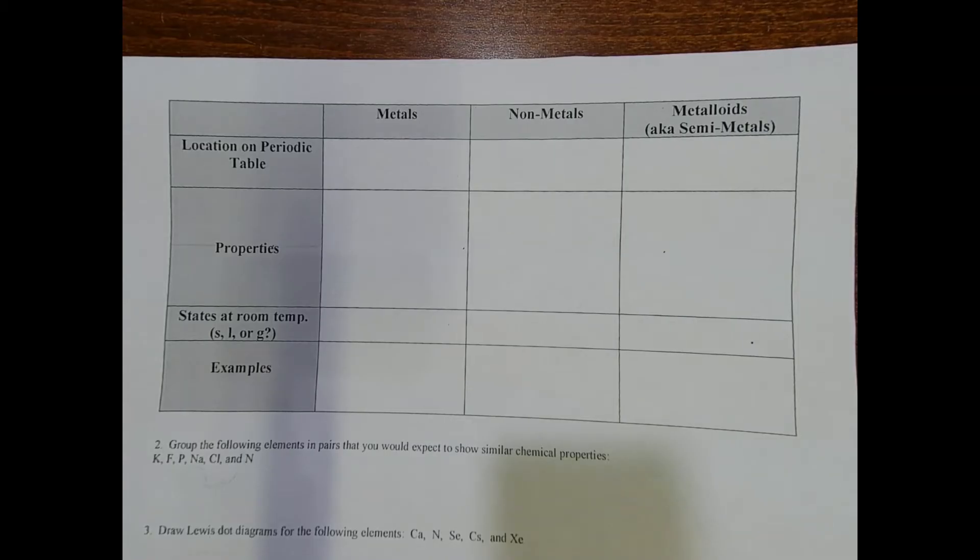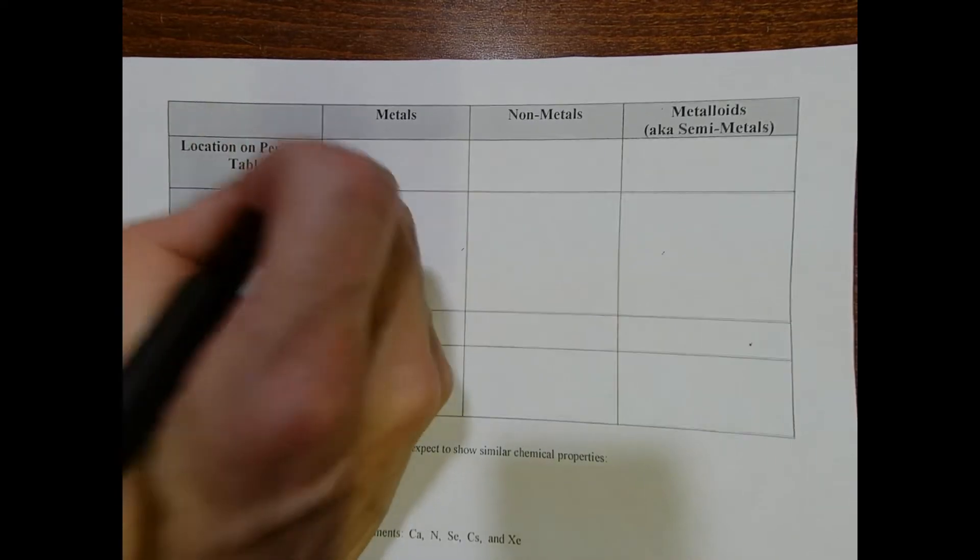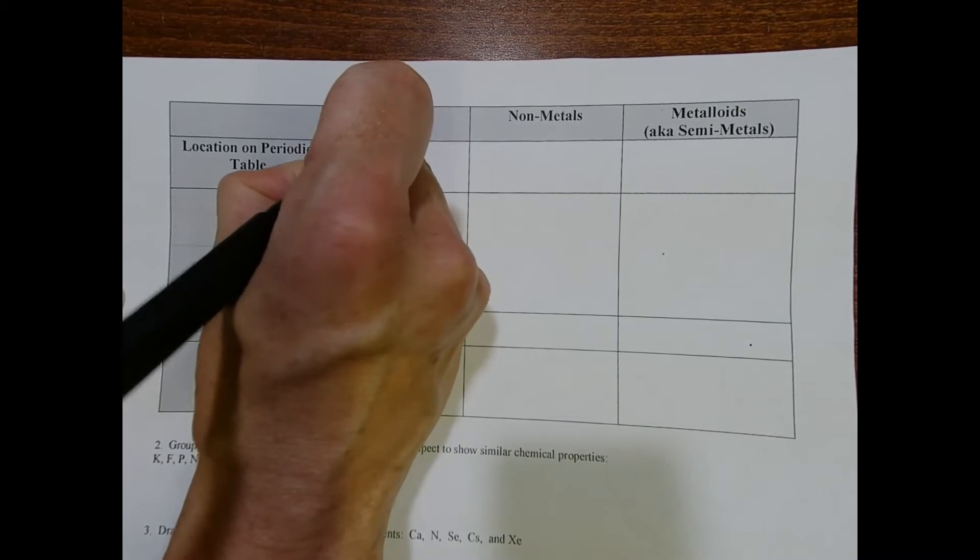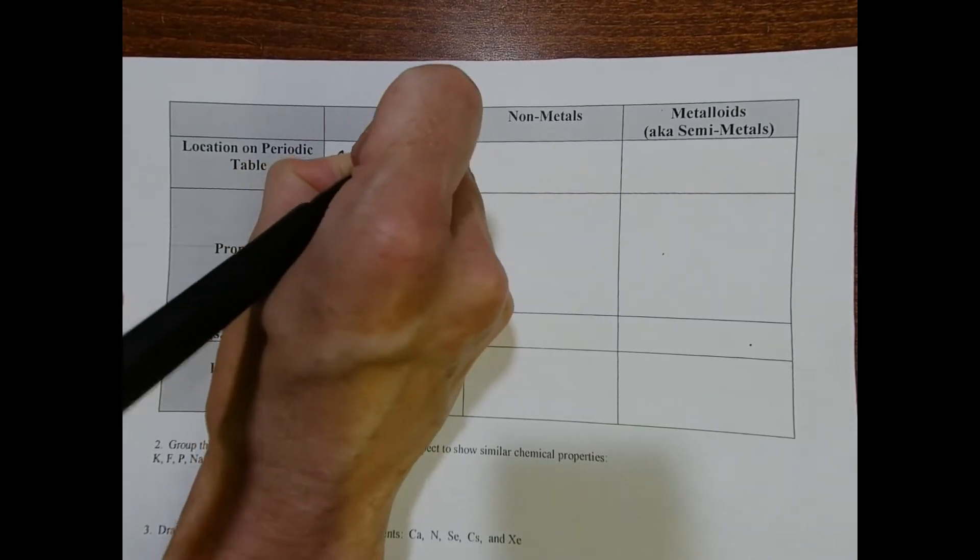From labeling the periodic table, we know that our metals are located to the left of the staircase.